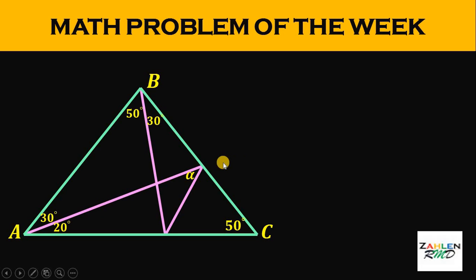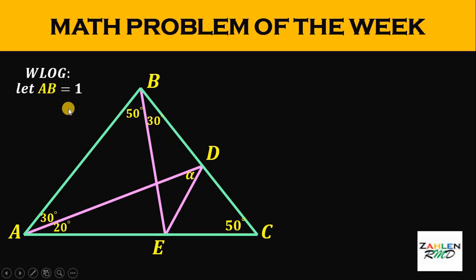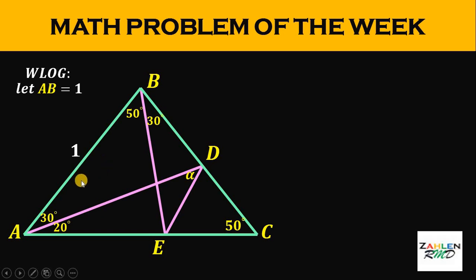To answer this problem, we're going to let this point be point D and this point E. Without loss of generality, let side AB equal 1. The reason is because if we enlarge or squeeze this figure, the side lengths of this triangle change but not the angles. Therefore, we can set any side length for side AB. Our plan to solve this kind of problem is to use trigonometry — this is a 100% sure solution.